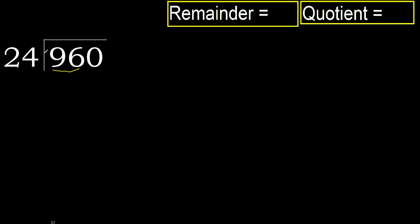Therefore, with 96: 24 multiplied by which number is nearest to 96 but not greater? 24 multiplied by 5 is greater, so multiply by 4. 96 is not greater.